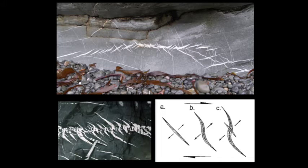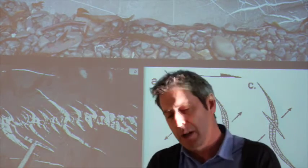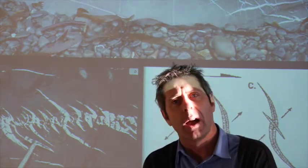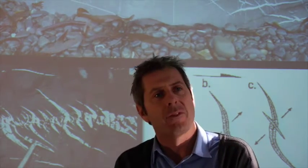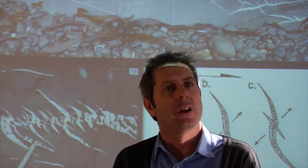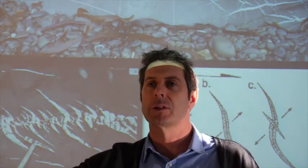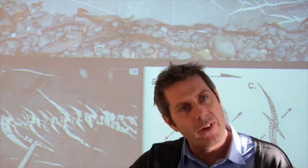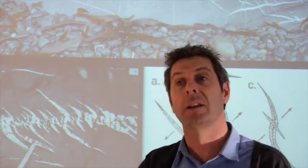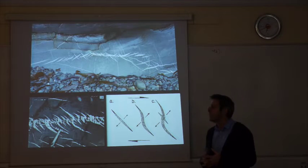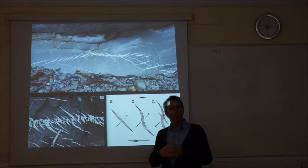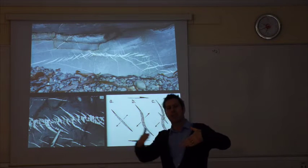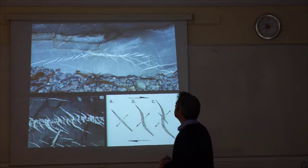Veins largely occur in sets, not on their own. Because a vein is just a fracture — the rock is trying to develop deformation but hasn't got huge energy, so it creates a whole series of small fractures. Fluids move through, fill in those fractures, and it's frozen into the rock. So we can see here a series of what we call en echelon — side-stepping fractures.